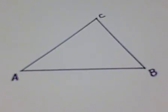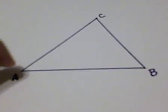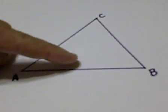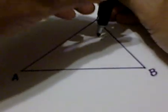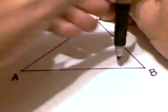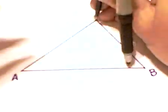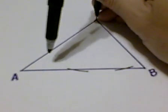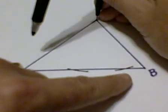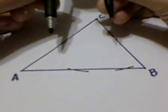So first I'm going to make an altitude from vertex C through side AB. We have to place our stylus on the vertex of point C and strike two arcs through side AB. They have to be two unique spots so that we can see them clearly.